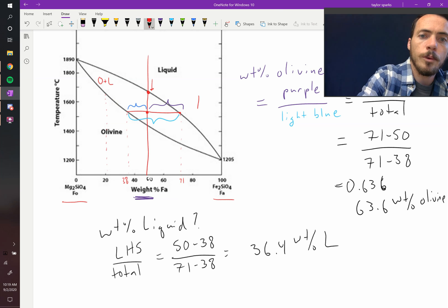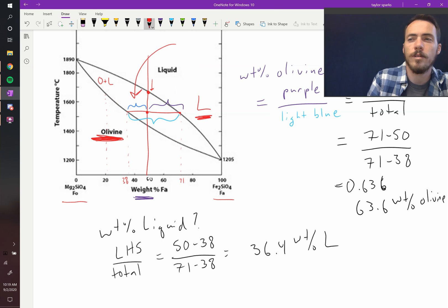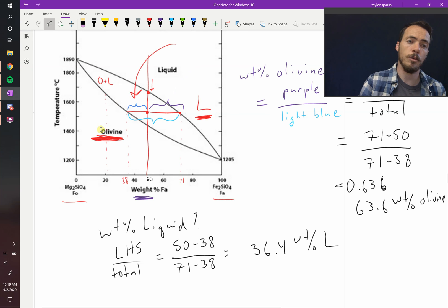So, you notice the catch here, over here we had liquid on this side and we had olivine on this side, so when we want to figure out the compound on the left-hand side, that's this one over here, we took the right-hand segment over the total. When we wanted the segment over here on the right, the liquid, we take the left-hand segment over the total. So, it's opposite what you think, if you want the one on the right, you take the left-hand segment over the total. If you want the one on the left, you take the right-hand segment over the total. That's called the lever rule.